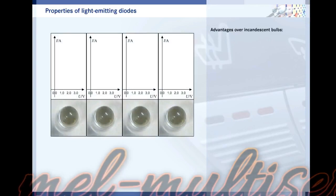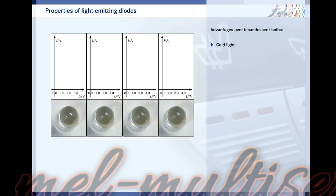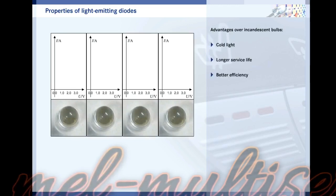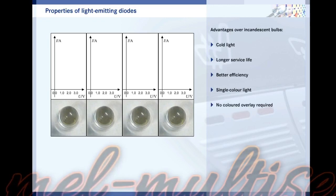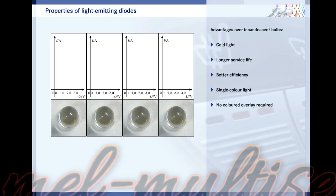LEDs have a number of advantages over the glowing filament of a light bulb. An LED emits cold light. Because no heat is emitted, the service life and efficiency are much better. The light is not emitted in a broad spectrum resulting in white light, but only in a specific range of the spectrum. This depends on the semiconductor material, and therefore coloured overlays are not required.